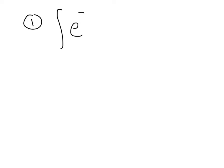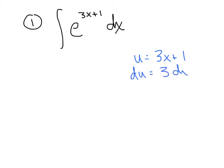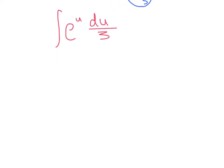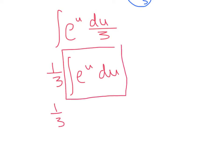Let's integrate e raised to the 3x+1 power. We let u equal the exponent 3x+1. The derivative of u is 3 dx, so we instantly solve for dx, getting du/3. Substituting u for the exponent and du/3 for dx, we get e to the u times du/3. Pulling the coefficient out front: one-third integral of e to the u du. The antiderivative is e to the u plus c. Rewriting in terms of x: one-third e to the 3x+1 plus c.